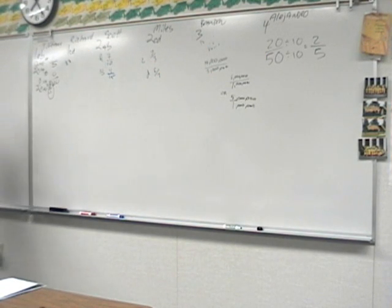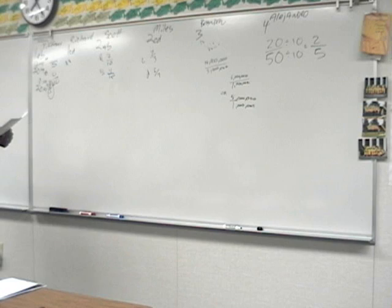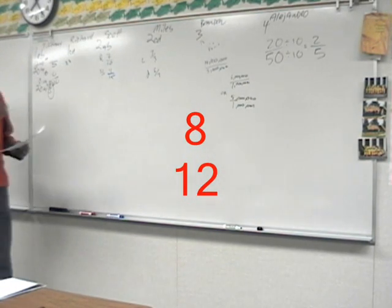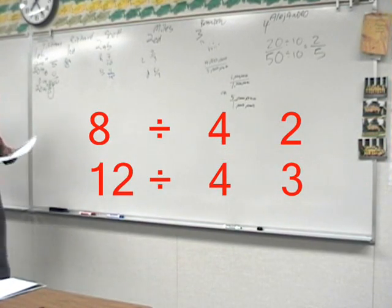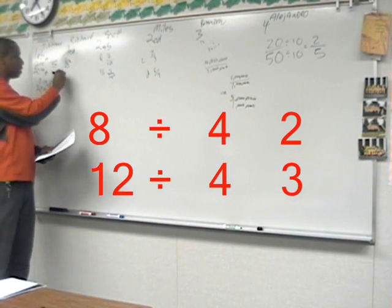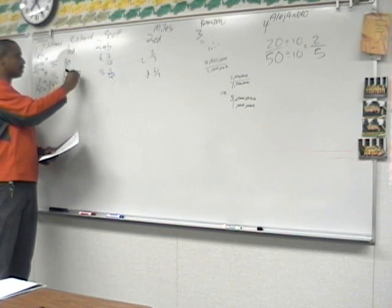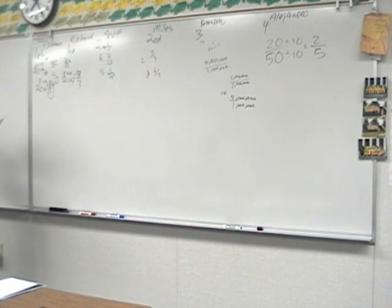Now we're looking at multi-step problems, so you're going to have to figure out the numbers and then set up an equation. C: what is the ratio of the number of men to the number of women? That's 8 to 12. We reduce by 4 — the greatest common factor — giving us 4 to 3, men to women.